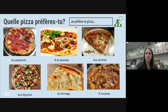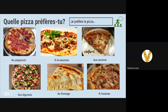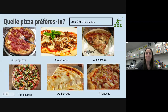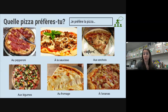And over here, légume — qu'est-ce que c'est en anglais? Vegetables — exactly. Très bien. Légume, ananas. The rest is pretty obvious. Au fromage is just plain cheese.